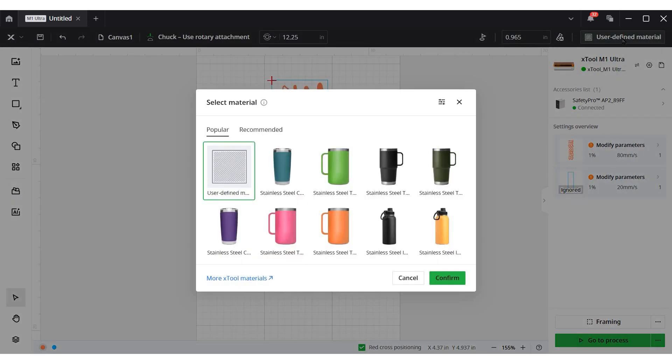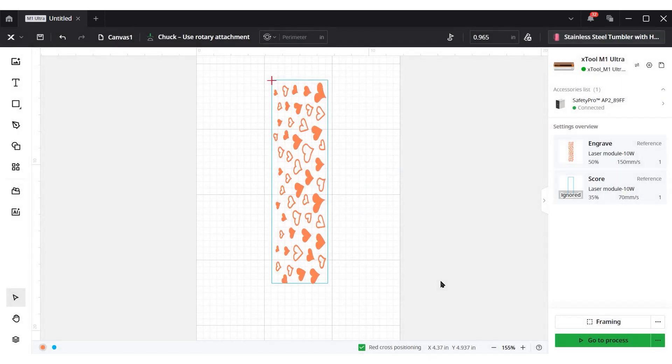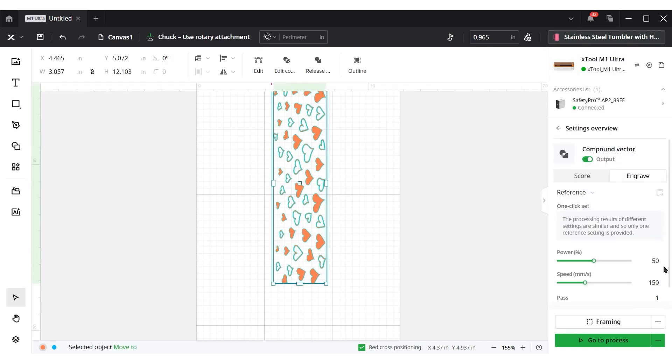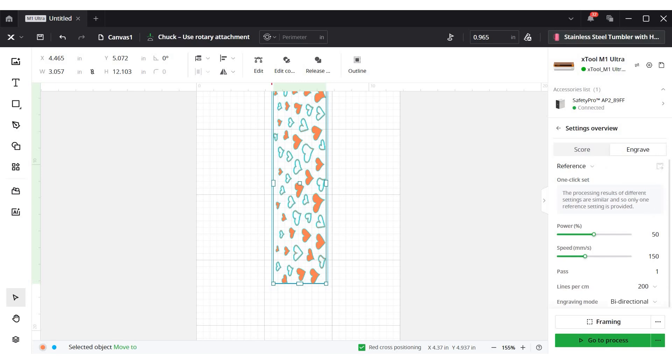I always recommend testing something first. I am going to choose just a pink stainless steel tumbler. I have tested a lot of tumblers, and I have found that typically the standard settings work, but make sure you have a couple pieces to test on. So we are going to use the standard settings here of 50% power, 150 speed, and 200 lines per centimeter. And everything is set to engrave.